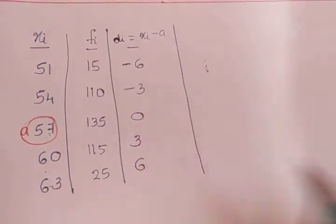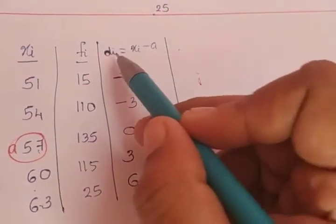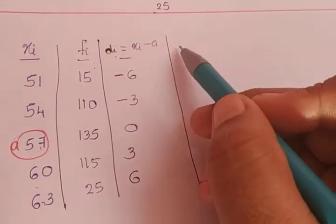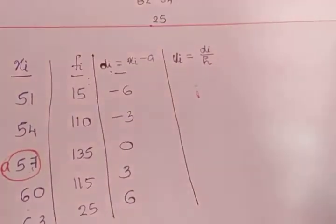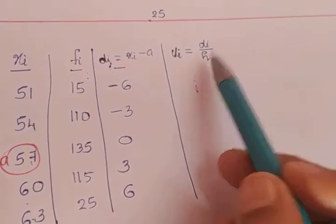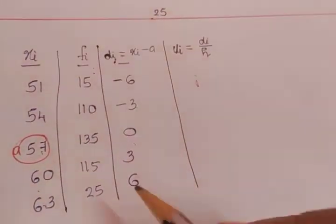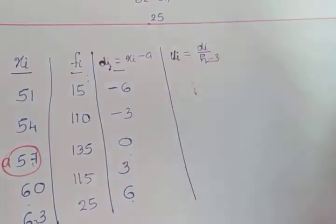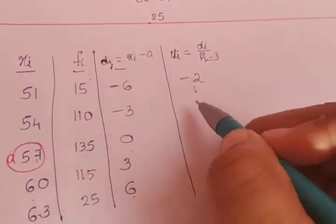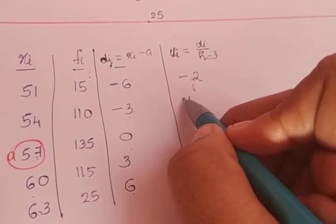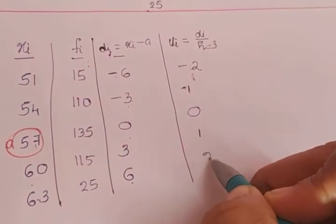In the assumed mean method, the next step would be fi × di. But in the step deviation method, we add another column: ui, where ui = di divided by h. h is the common difference in the di column, which is 3. So ui values are: −6/3 = −2, −3/3 = −1, 0/3 = 0, 3/3 = 1, and 6/3 = 2.